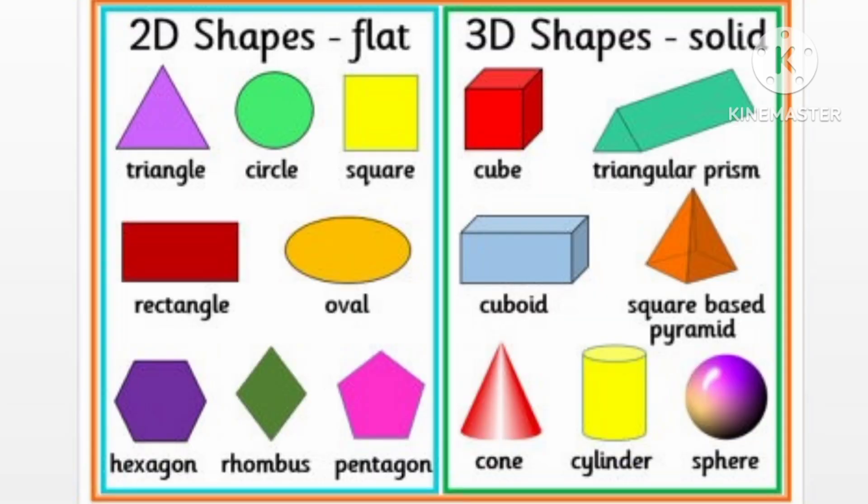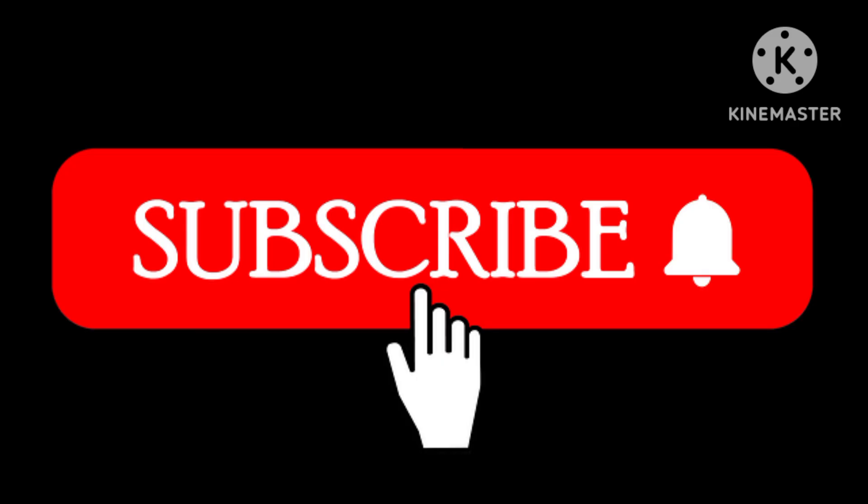2D shapes are flat. 3D shapes are solid. Thank you. Subscribe.